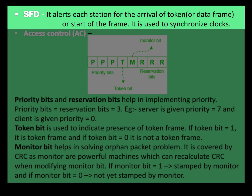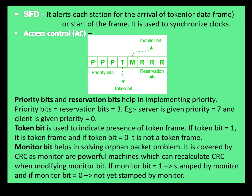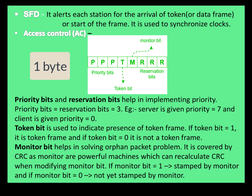SFD alerts each station for the arrival of a token or the start of the frame. It is used to synchronize the clock. It indicates the start of the frame and is represented in hexadecimal. SFD is one byte in size.